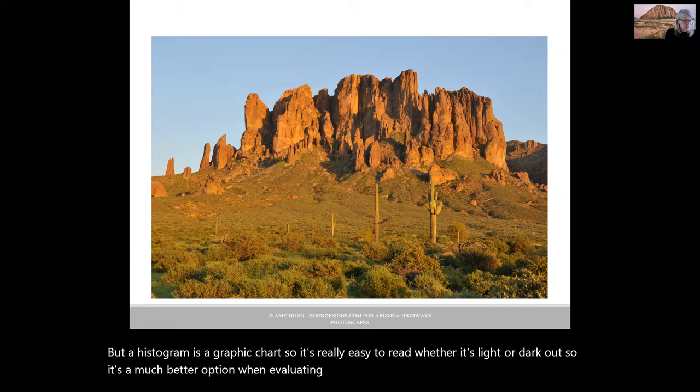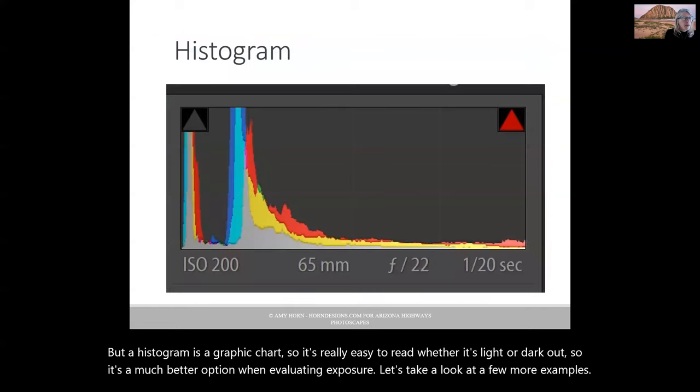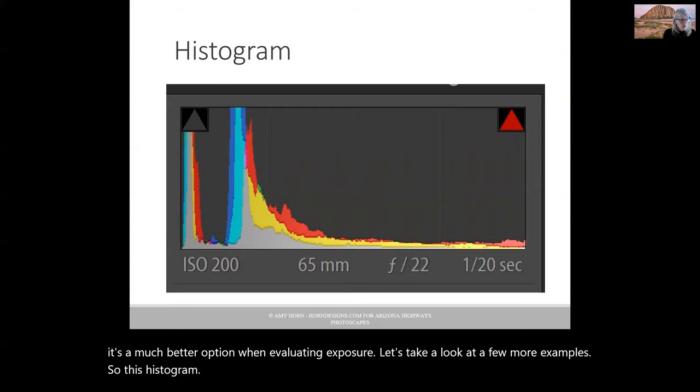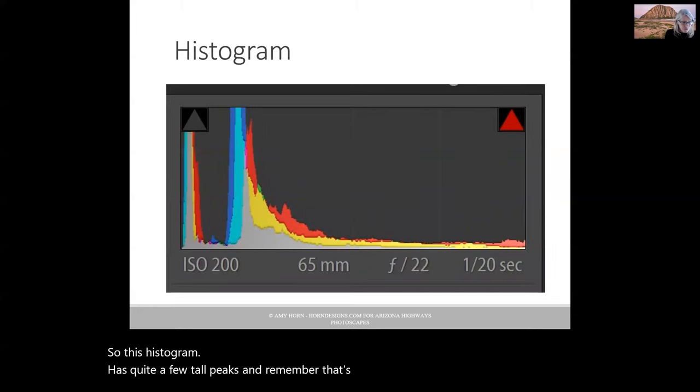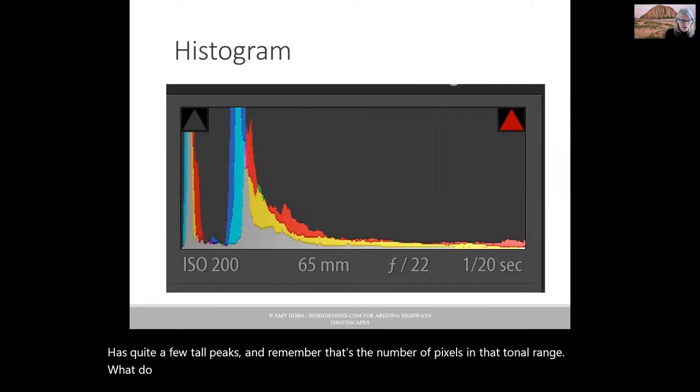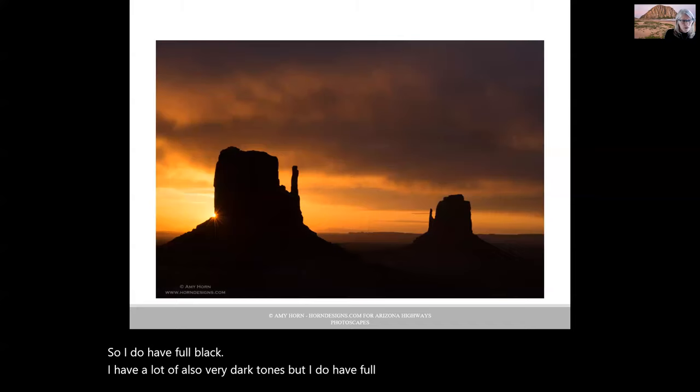Let's take a look at a few more examples. This histogram has quite a few tall peaks, and remember, that's the number of pixels in that tonal range. What do you think the image looks like? I do have full black, a lot of very dark tones, but I do have full whites as well.